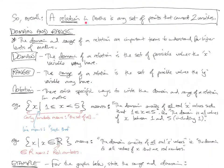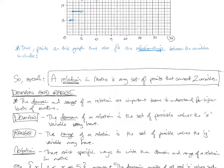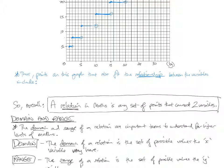So overall, a relation in maths is any set of points that connect two variables. If you look at these lines here, there are points that lay on those lines. What's a point that is on this relation? Points on this graph that also fit the relationship between the variables include: well, this point here is going to be one, five. If I consider that next point, that is three across and eight up — that's another point that fits on that relation. This is another point at four, eight.